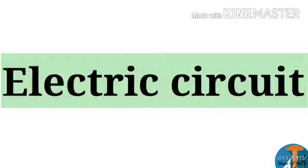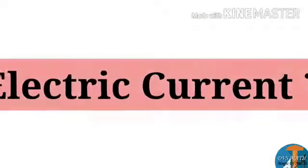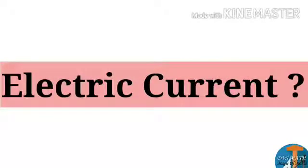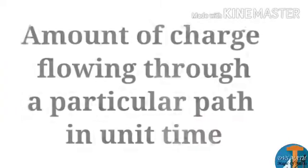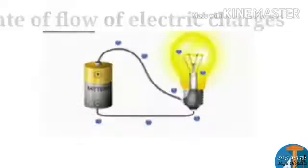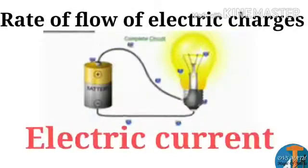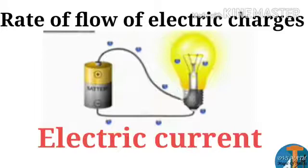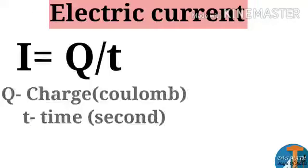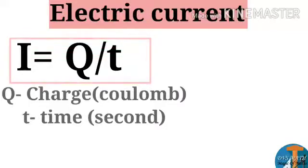A switch makes a conducting link between the cell and the bulb. This continuous and closed path of electric current is called an electric circuit. So what do you mean by electric current? It is the amount of charge flowing through a particular path in unit time, or the rate of flow of electric charges is called electric current. Electric current is represented by the letter I. The formula for current is I = Q/t, where Q is electric charge and t is time taken.